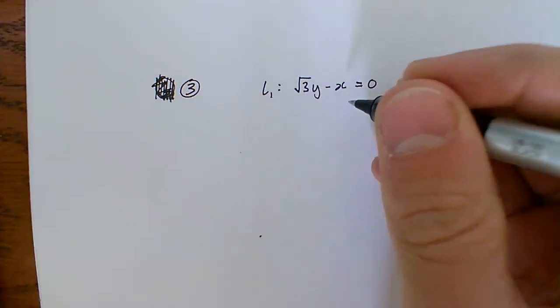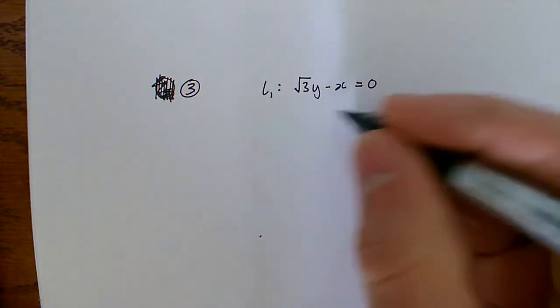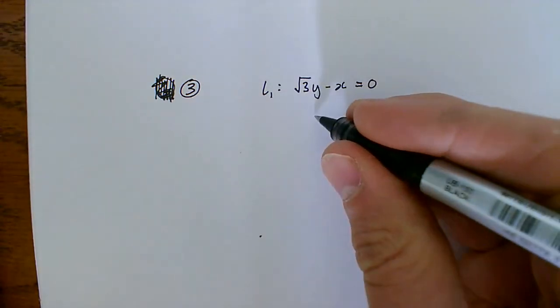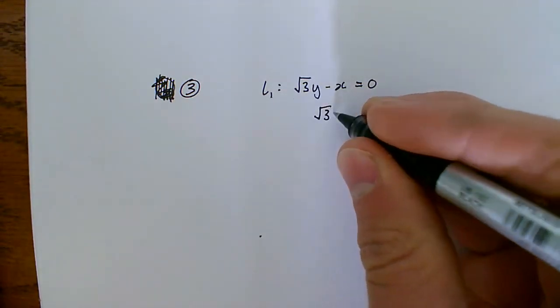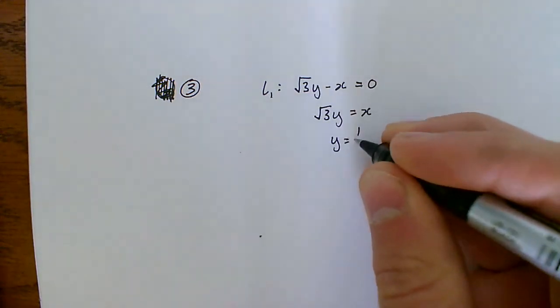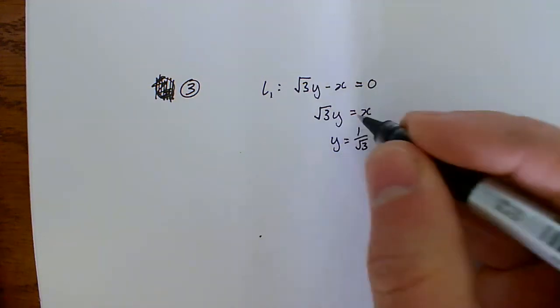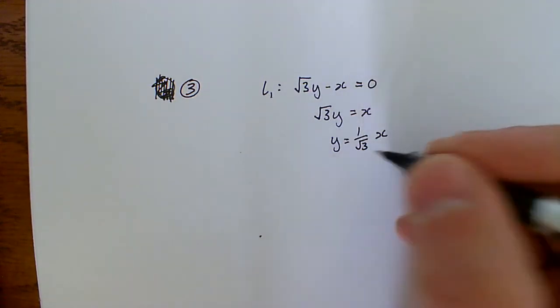We know that L2 is perpendicular, so we need to find the gradient of L1. But that means we need to rewrite it. So the first thing we're going to do is rewrite it as root 3y equals x. And then y equals 1 over root 3x. Because we're dividing both sides by root 3, best way to write that is 1 over root 3.